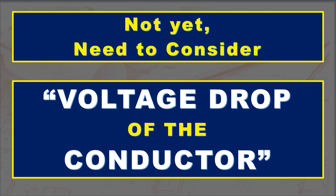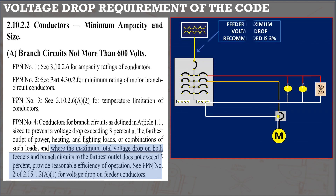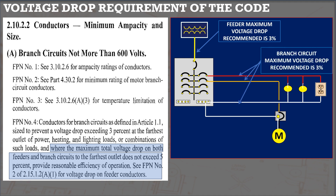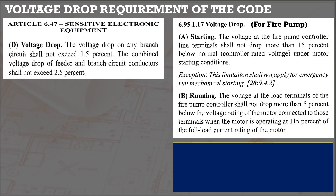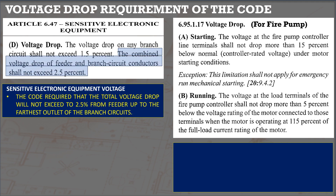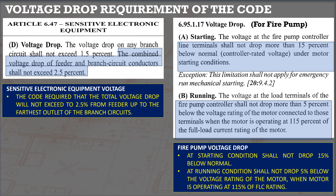This is voltage drop of the conductor. As stated in FPN4 of Section 2.10.2.2, it is recommended that the total voltage drop from the feeder is a maximum of 3%, same with branch circuits, and the total voltage drop shall not exceed 5% from feeders to the farthest outlet. Though not mandatory for branch circuits and feeders, this helps improve performance and efficiency. For sensitive electronic equipment, the total voltage drop shall not exceed 2.5%. For fire pumps, the voltage drop at starting shall not drop 15% below normal, and at running condition shall not drop 5% below voltage rating at 115% of full load current.